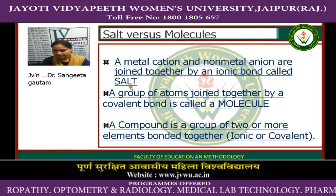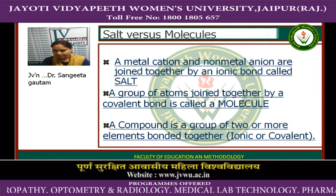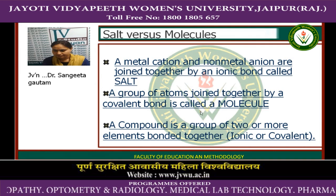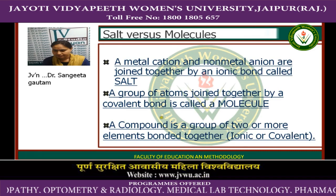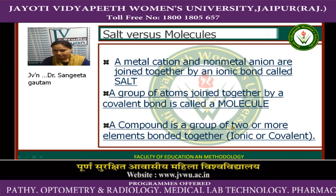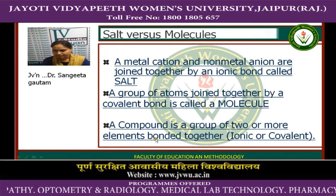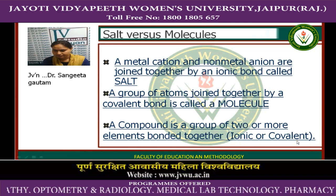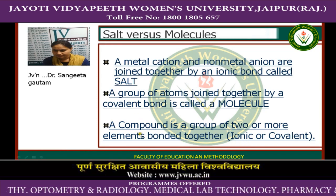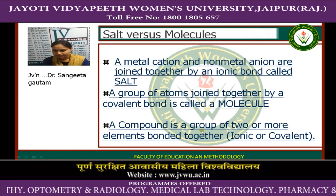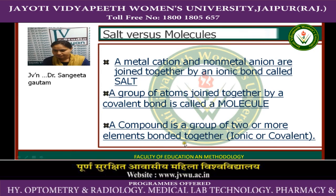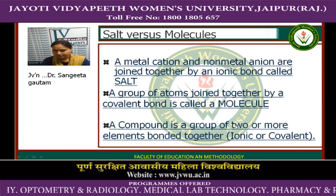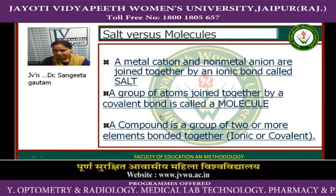In salts, ionic bonding is formed, and in molecules, covalent bonding is formed. A compound is a group of two or more elements bonded together by either an ionic or covalent bond.